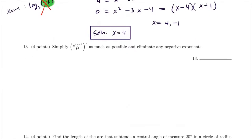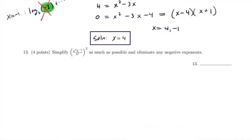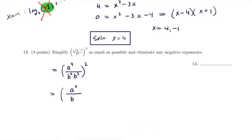Number 13 — simplify using laws of exponents. Take a⁴ on top; move b to the negative 3 to the denominator as b³, giving a⁴ over b⁴·b³, all to the second power. Combine b⁴·b³ = b⁷, so we have (a⁴ / b⁷)². Distribute the exponent: a⁸ over b¹⁴. That's our simplified answer.